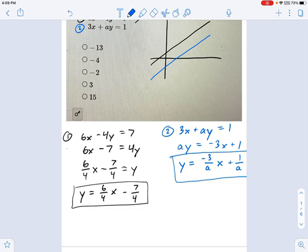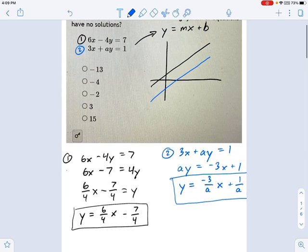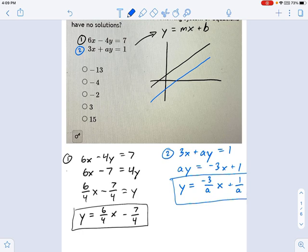So there's the two equations, and remember what it takes for two lines to be parallel. They have to have the same slope. When you have the same slope, that means no solutions. Because they're parallel. They're never going to intersect.